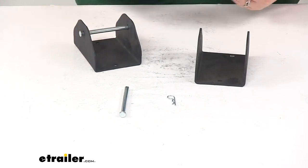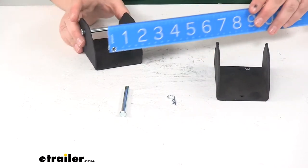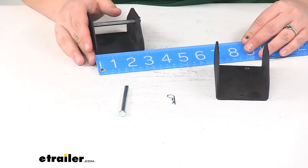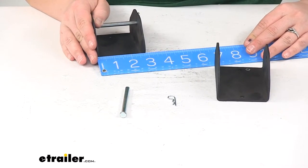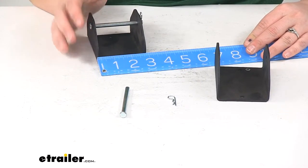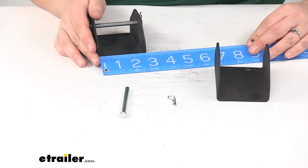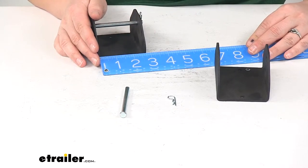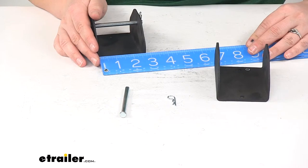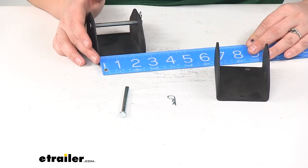As far as dimensions, the brackets are both about two and seven-eighths inches across. The inside dimension is about two and five-eighths inches.